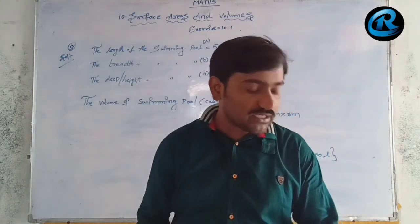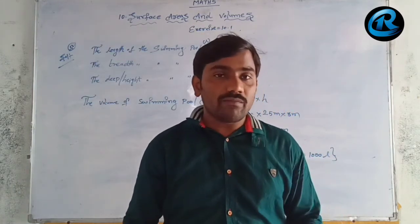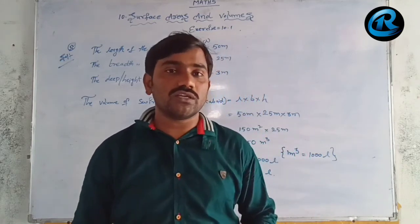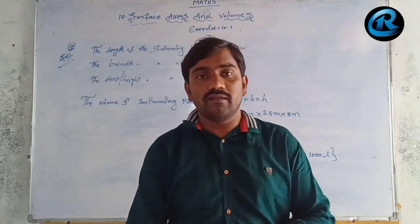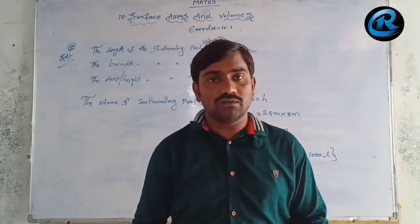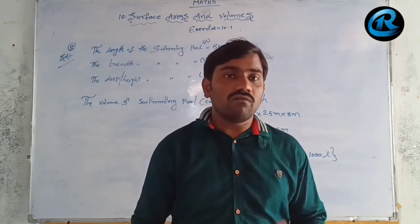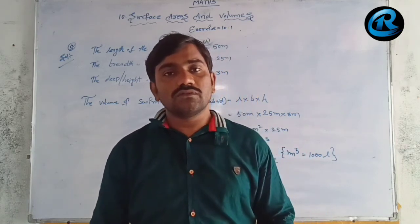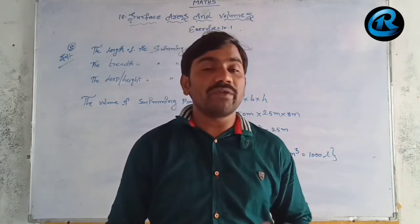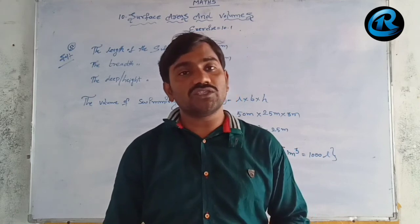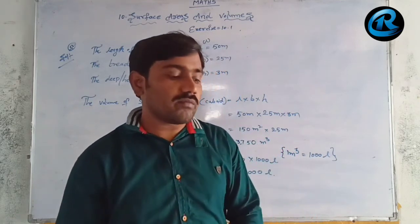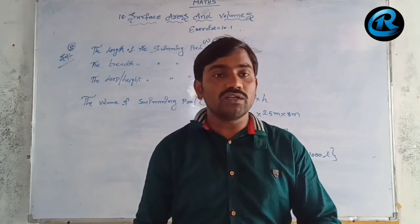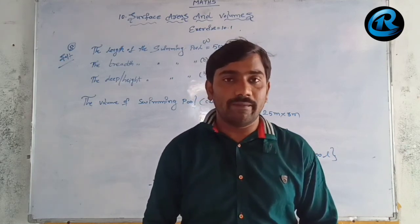To summarize: use the volume formula — area of base into height. For a pyramid, volume = ⅓ × area of base × height. Remember these formulas so you can easily solve exercise 10.1. I hope you understood. Thank you for watching. Bye.